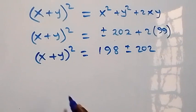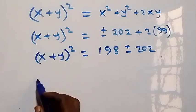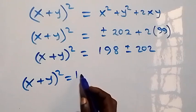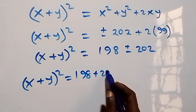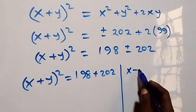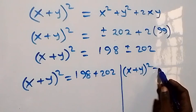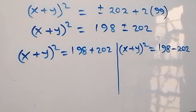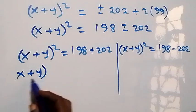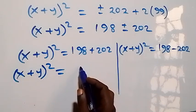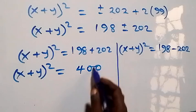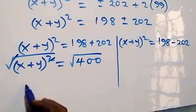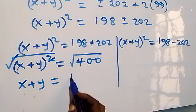We can separate this into two cases. The first: (x plus y) squared equals 198 plus 2√2. The second: (x plus y) squared equals 198 minus 2√2. For the first case, the sum gives us 400. To get x plus y, take the square root on both sides — square root cancels the square — so x plus y equals plus or minus 20.